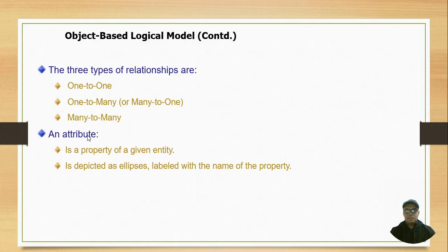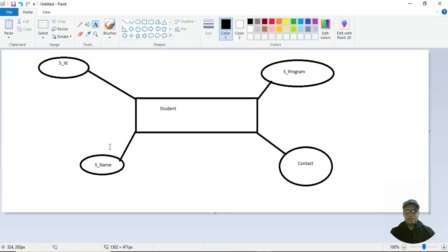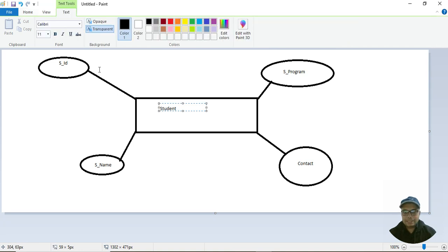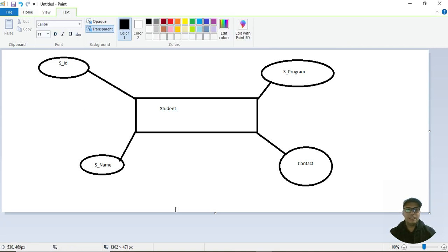As you can see, there is one entity. As per the definition, an attribute is a property of a given entity. So these are the attributes given by whom? Given by the entity. Who is the entity? Student is the entity here.